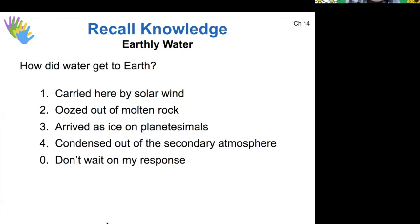The leading theory of how water arrived on Earth is that it came here as ice on planetesimals. So during that early stage of violent collisions in the early solar system, some of those objects would have contained ice and those would have brought water to Earth.